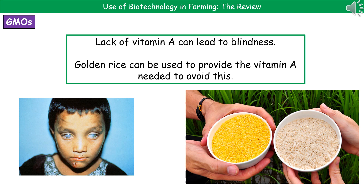Welcome to our review on the use of biotechnology in farming. The first thing we're going to consider is a problem we have in the world today, which is that there's a large number of people who are at risk of developing blindness as a result of a lack of vitamin A in their diet. The reason they lack vitamin A is because in their particular regions they don't have access to all of the different fruits and vegetables that we do in the UK. One thing we can actually do to solve this problem and stop all these people going blind is to change the type of rice that they're eating.